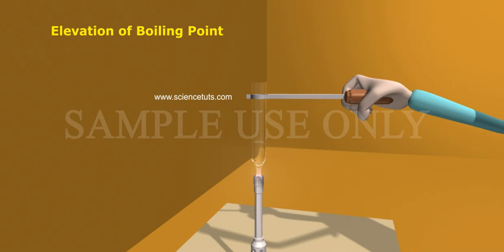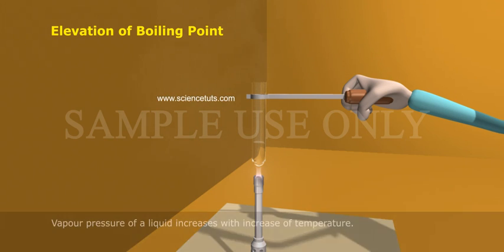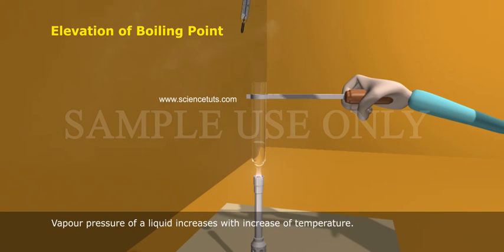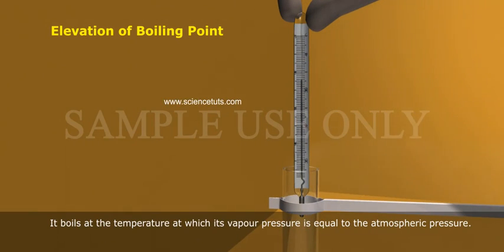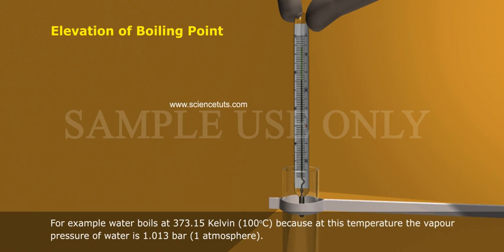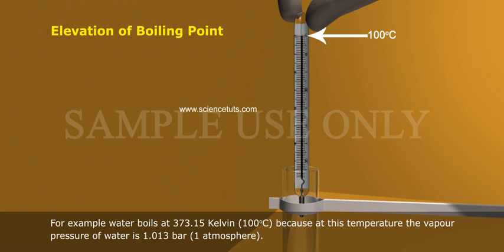Elevation of Boiling Point. We have learnt in Unit 5, Class 11, that the vapour pressure of a liquid increases with increase of temperature. It boils at the temperature at which its vapour pressure is equal to the atmospheric pressure. For example, water boils at 373.15 Kelvin, equivalent to 100 degrees centigrade, because at this temperature the vapour pressure of water is 1.013 bar, i.e., 1 atmosphere.